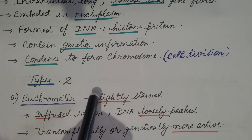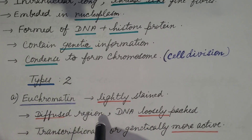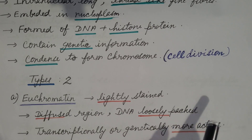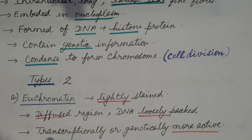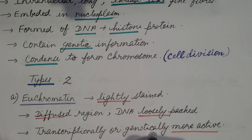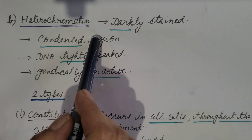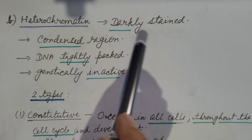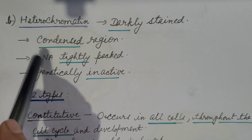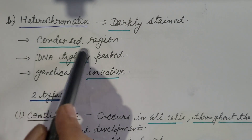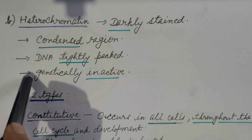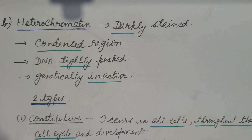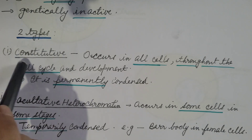The first type is euchromatin — it is a lightly stained, diffused region where DNA is loosely packed. It is transcriptionally or genetically more active, meaning the genes present are expressed. The second type is heterochromatin — it is a darkly stained, condensed region where DNA is tightly packed and is genetically inactive.